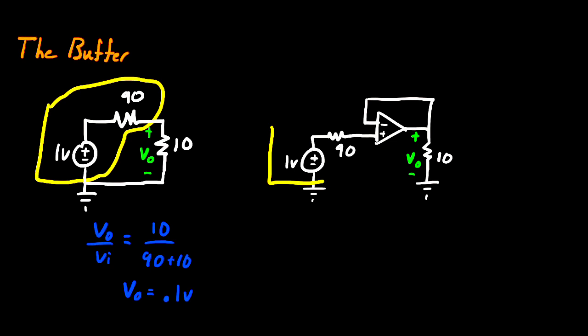So let's say we have this same Thevenin source over here on the left, and we'll go ahead and start analyzing it. The first thing I'm going to do is define a current for both my resistor components. Let's call this I1, and we'll call this one over here I2.